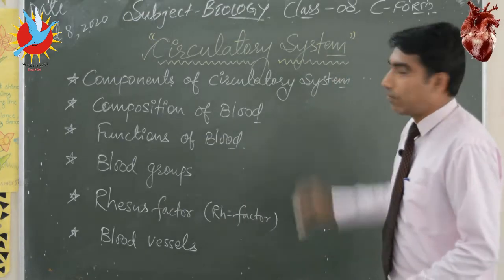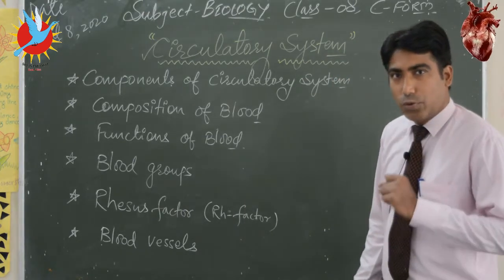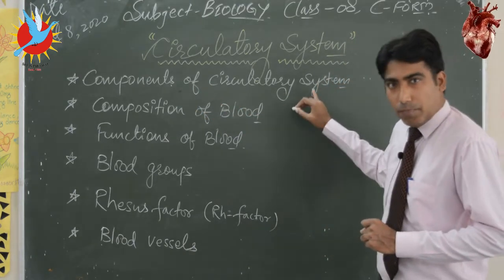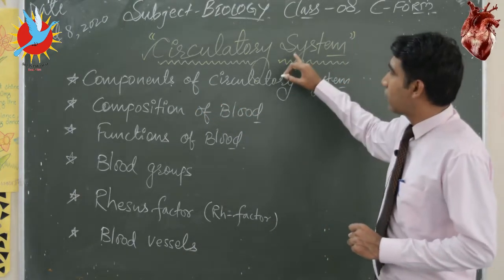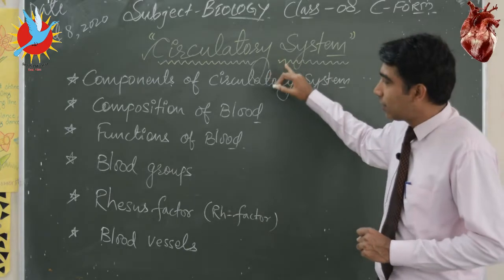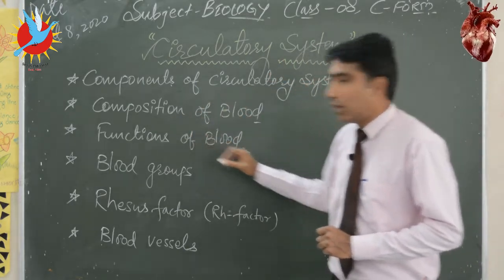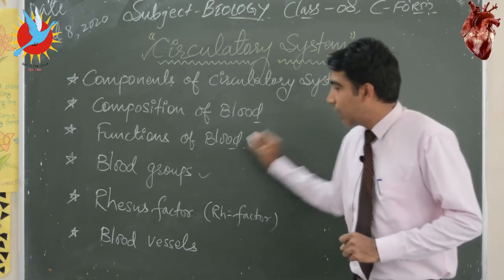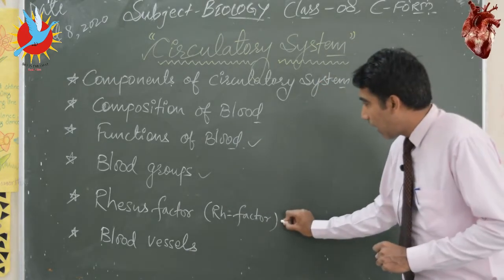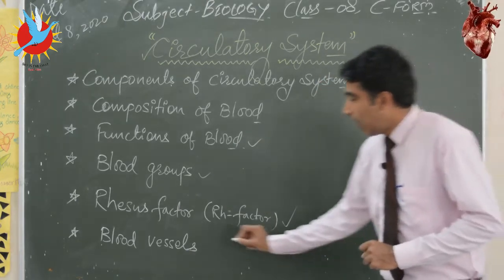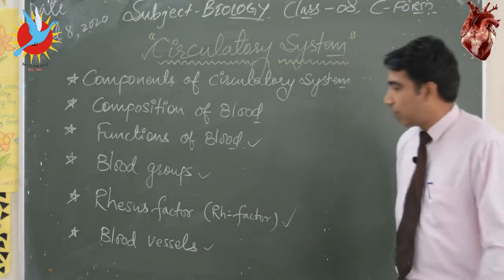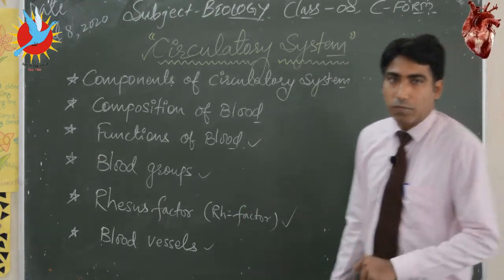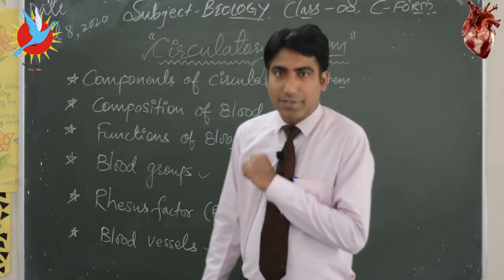In this chapter we are going to discuss topics like components of the circulatory system. Before that, we will discuss the introductory part, then composition of blood, function of blood, different kinds of blood groups, Rh factor, rhesus factor, and finally blood vessels, which is the main component of the circulatory system.